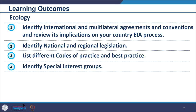The learning outcomes after this session include being able to identify and list international and multilateral agreements and conventions, and review their implications on a country's EIA process. You should also be able to identify national and regional legislation, list different codes of practice and best practices, know which ones to refer to for specific domains, and identify special interest groups that can be part of the EIA process.